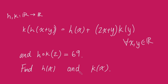We have two functions h and k, both from the reals onto the reals, and it satisfies this equation: k of h of x plus y equals h of x plus 2x plus y times k of y, for all real numbers x and y. And we're told that h composed with k of 2 is 69.